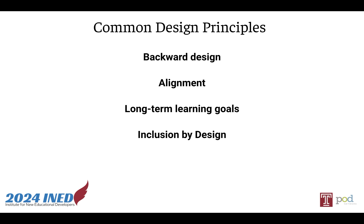We want to build inclusion into our courses from the very beginning — inclusion by design. We want relevance and belonging for our students, and we can design that into our courses from the start as much as possible. We can articulate our own assumptions, examine our own biases, and include additional voices and perspectives — whether that's diversifying course materials, looking at the activities we use for accessibility, or creating a sense of community. We should think through how to make our courses relevant and effective for everyone, building in the flexibility necessary to make that happen.